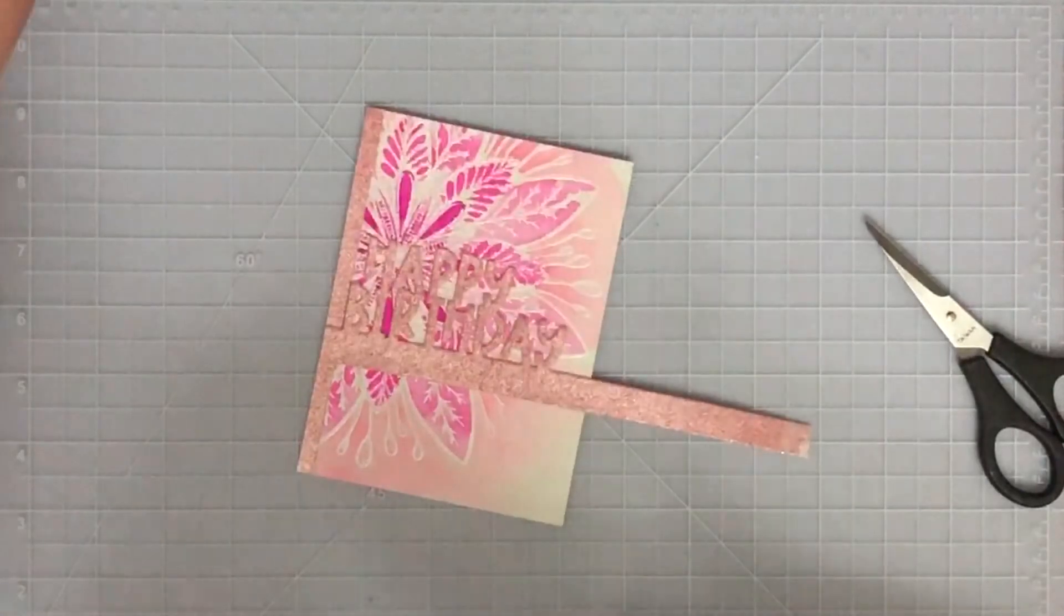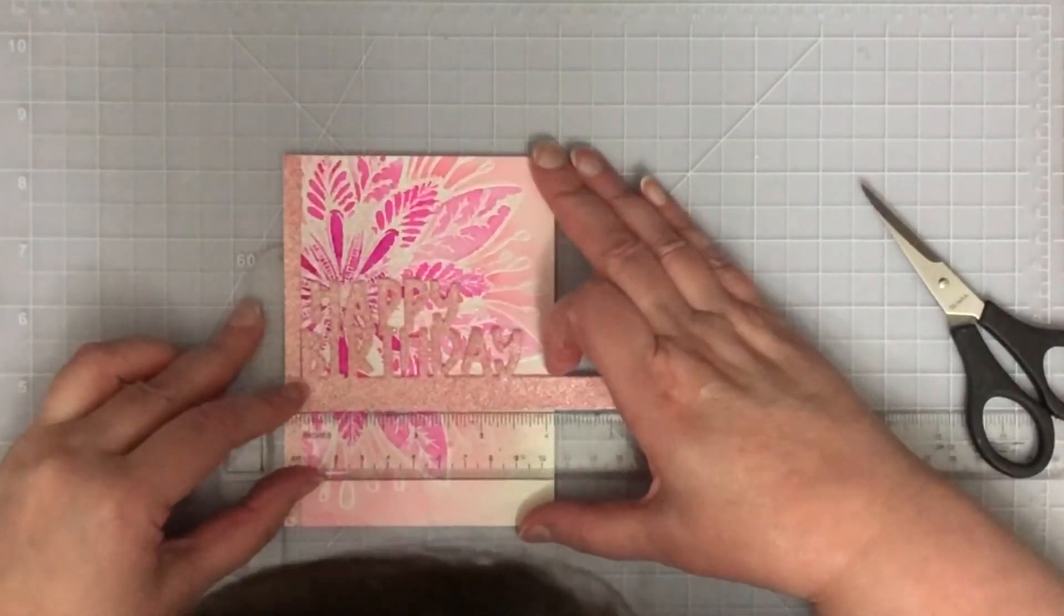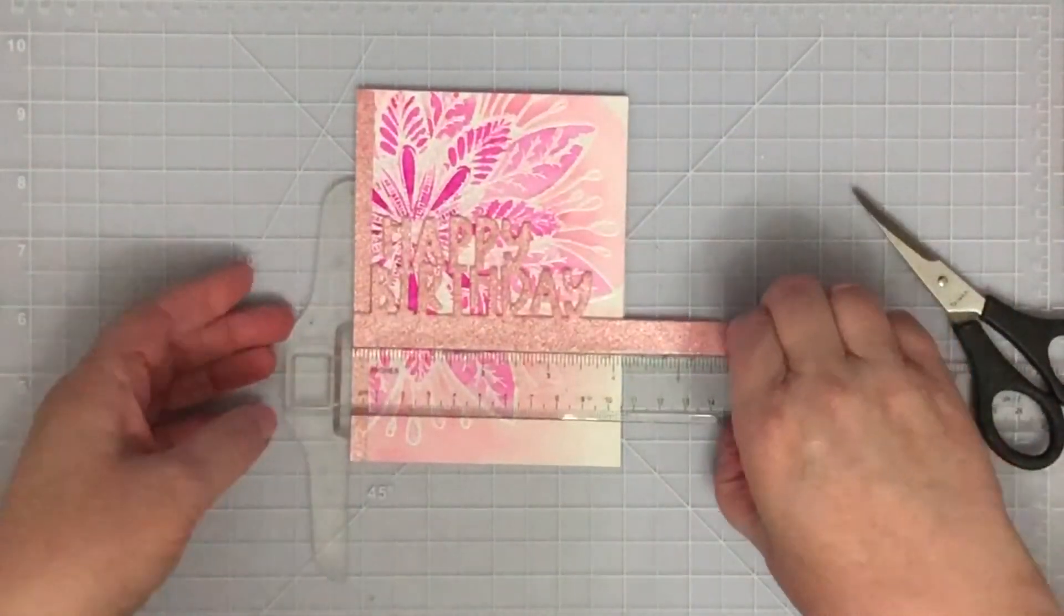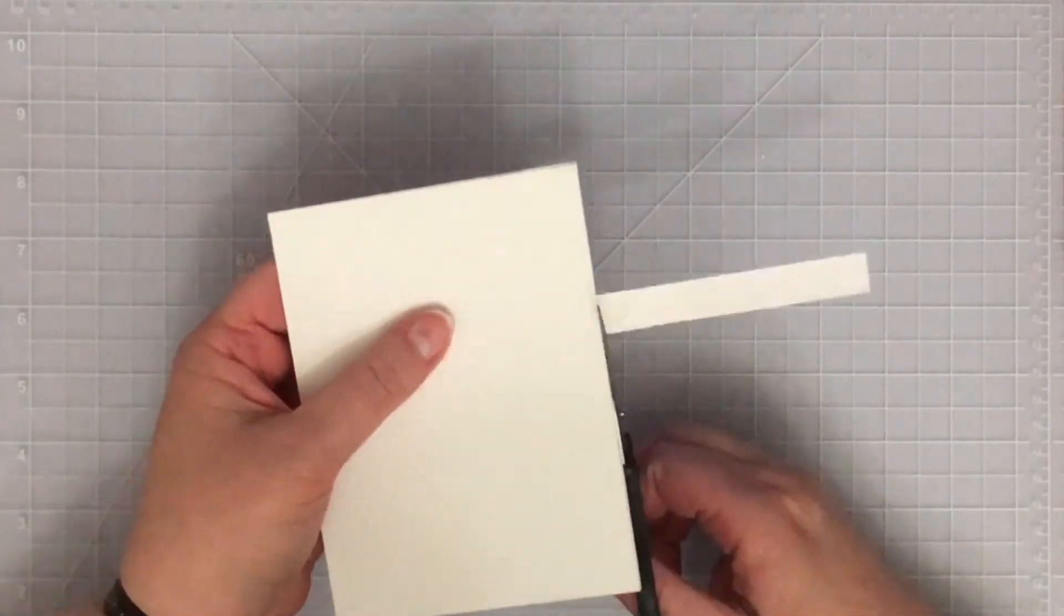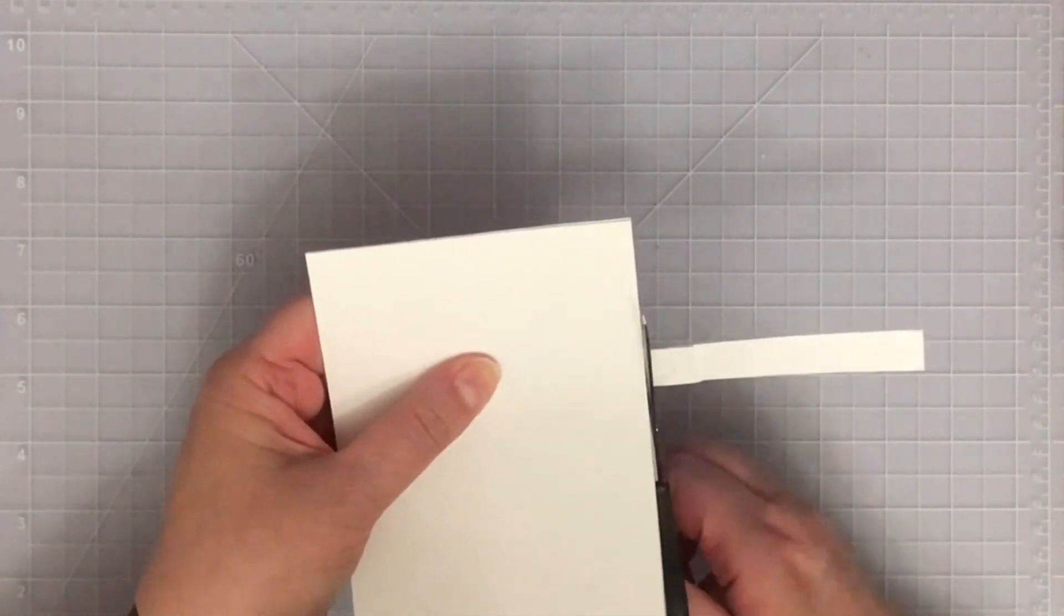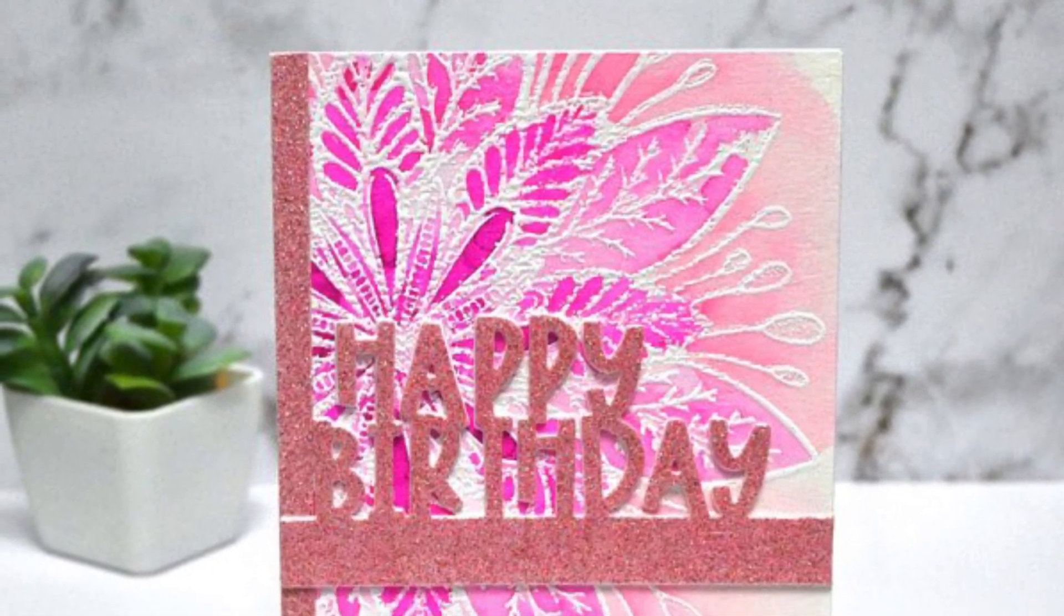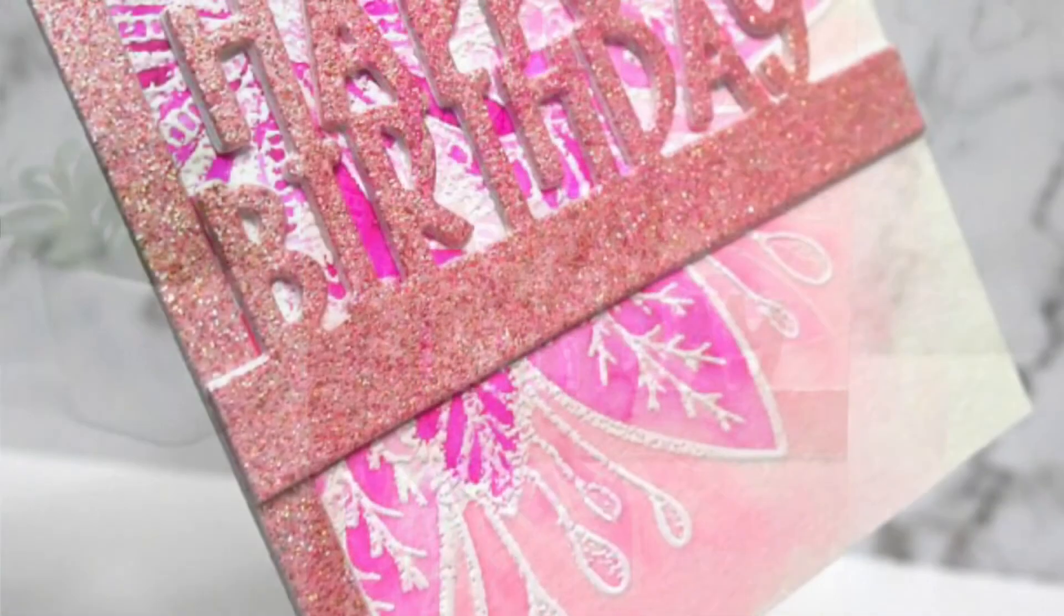By adding these extra layers, it adds a bit of a shadow behind the sentiment and aids in its legibility. I've just adhered that down onto my card and I'm cutting off the excess, making sure it's all lined up straight. Thank you very much for joining me today. I hope you enjoyed seeing how I made this card. We'll see you next time. Bye bye.